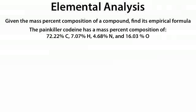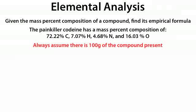Next we're going to talk about elemental analysis: given the mass percent composition of a compound, find the empirical formula. The painkiller codeine has a mass percent composition of 72.22% carbon, 7.07% hydrogen, 4.68% nitrogen, and 16.03% oxygen. The key to solving these problems is to always assume there are 100 grams of the compound present. Step 1: find the mass of each element present.